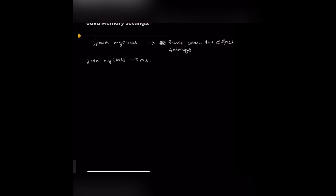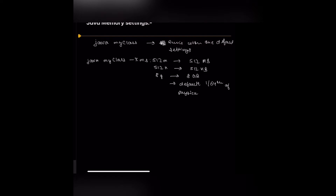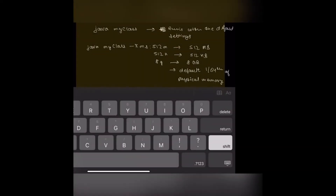The first parameter is -Xms, which is used to set the minimum heap size. For example, we can give it 512m — 'm' corresponds to MB, so it sets the minimum heap size to 512 MB. If we give 'k' it will be KB, and we can use 'g' for GB. We can configure it in bytes, KB, MB, or GB. If we don't define it, its default value is 1/64th of the physical memory available on that computer.